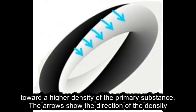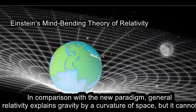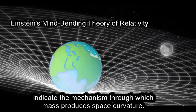The arrows show the direction of the density wave velocity as part of the electron vortex. In comparison with the new paradigm, general relativity explains gravity by a curvature of space, but it cannot indicate the mechanism through which mass produces space curvature.